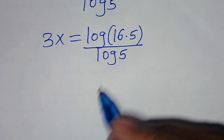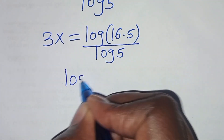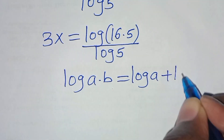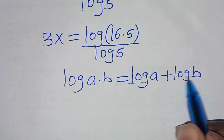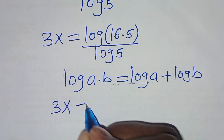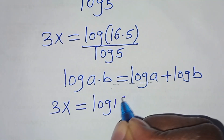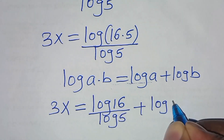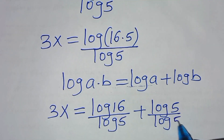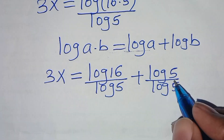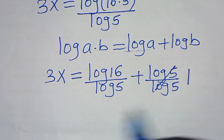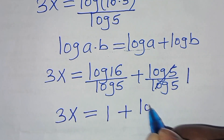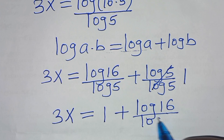The next step is that log of 16 times 5 is in the form of log A times B, which we can express as log A plus log B. Applying this logarithm property, we have that 3x equals log 16 divided by log 5, and log 5 divided by log 5 simplifies to 1, so 3x equals 1 plus log 16 over log 5.